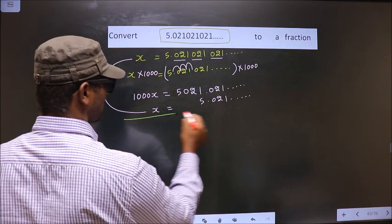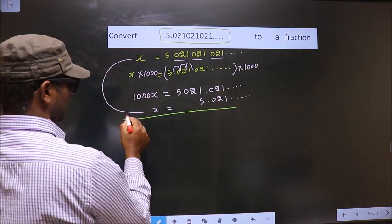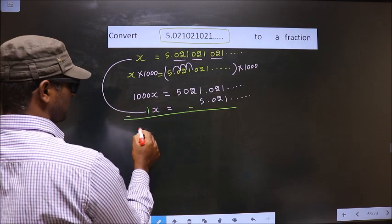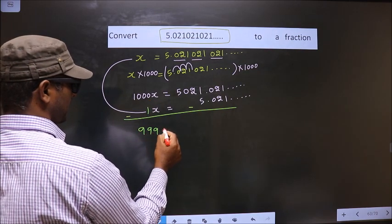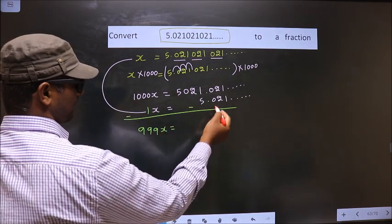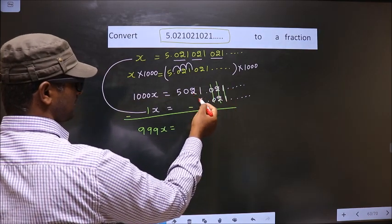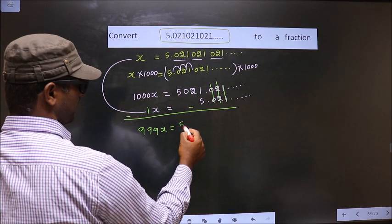Now we should subtract these two. That is minus here, minus here. So 1000x minus 1x is 999x equal to. Now all this cancels out. 5021 minus 5 is 5016.